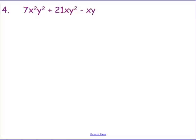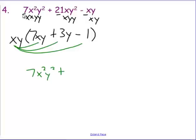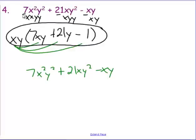One last example — pause and slow down here. I have a 7 and a 21, but there's also a third term with no numeric factor in common. For variables, the terms have x²y², xy², and xy respectively, so the most I can bring out is xy. Factoring out xy leaves 7xy + 21y − 1 inside. On checking by distributing, I caught a correction live: the middle term should be 21xy² not 3y, confirming that 21xy² divided by xy gives 21y. The checking process definitely helps.